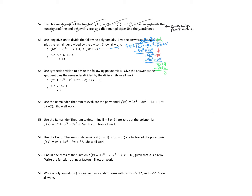So it says give the answer as the quotient plus the remainder divided by the divisor. So the quotient is 2x squared minus 3x plus 1, plus the remainder which is 2, divided by the divisor which is 3x plus 2. So this expression here is equal to this answer. So that's 53a.